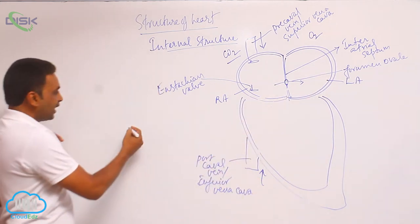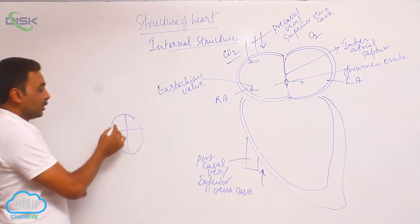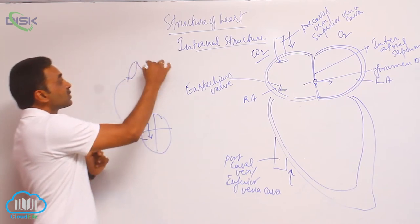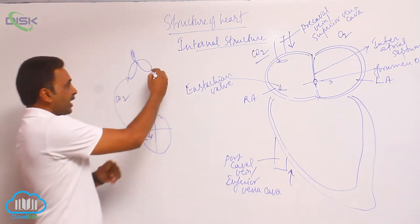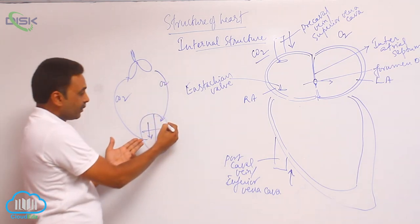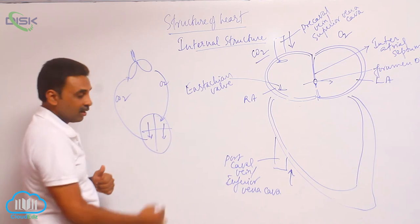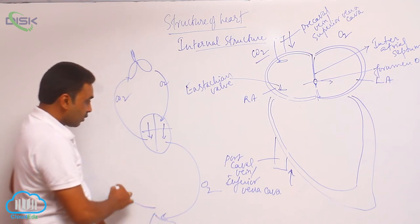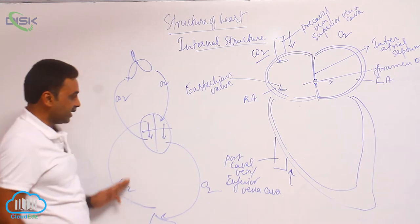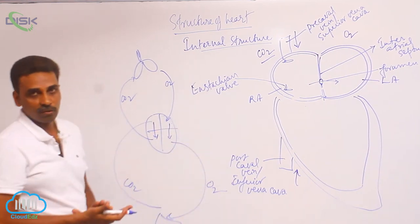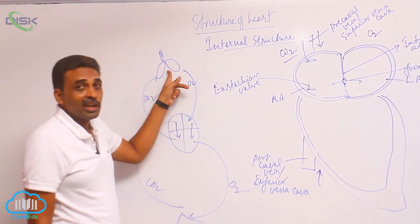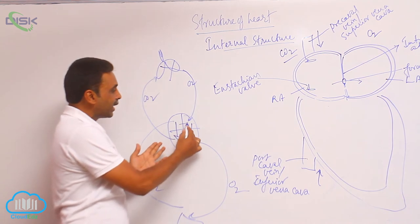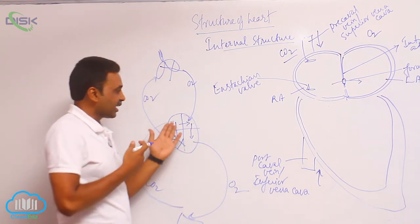The normal passage of blood flow: blood from the right atrium goes to the right ventricle, from the right ventricle it goes to the lungs where deoxygenated blood is oxygenated, then it comes to the left atrium, then to the left ventricle, which pumps blood to all parts of the body. But since the lungs are not working in embryonic stages, the blood is bypassed directly from the right atrium into the left atrium through the foramen ovale.